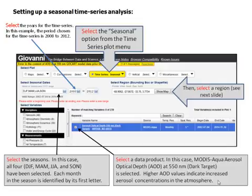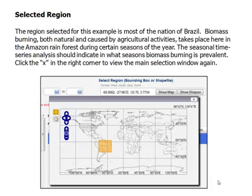Then select a region. The region selected for this example is most of the nation of Brazil. Biomass burning, both natural and caused by agricultural activities, takes place in the Amazon rainforest during certain seasons of the year. The seasonal time series analysis should indicate in what seasons biomass burning is prevalent.